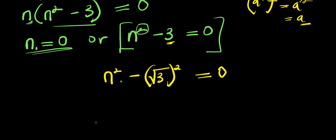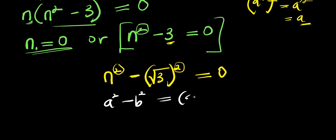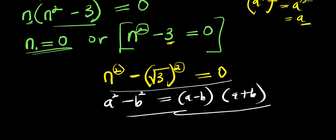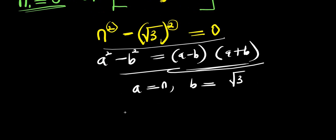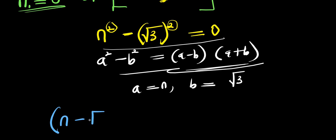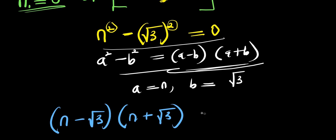At this point we have successfully made both exponents the same — this is power 2 and this is power 2 — with a minus sign between them. Applying the difference of two squares technique: a² minus b² equals (a minus b) times (a plus b). In this case, our a equals n and b equals root 3, so we expand accordingly.